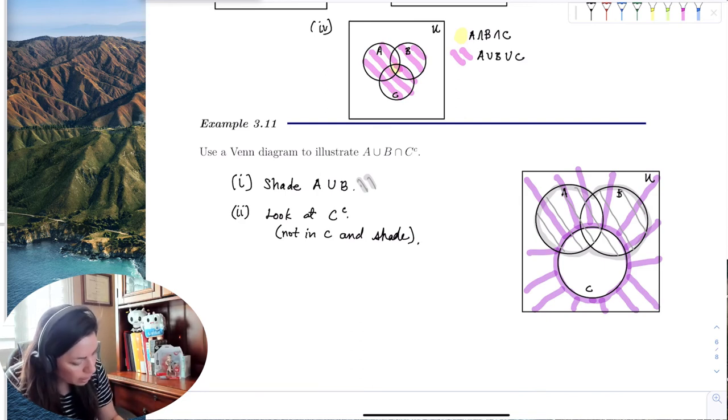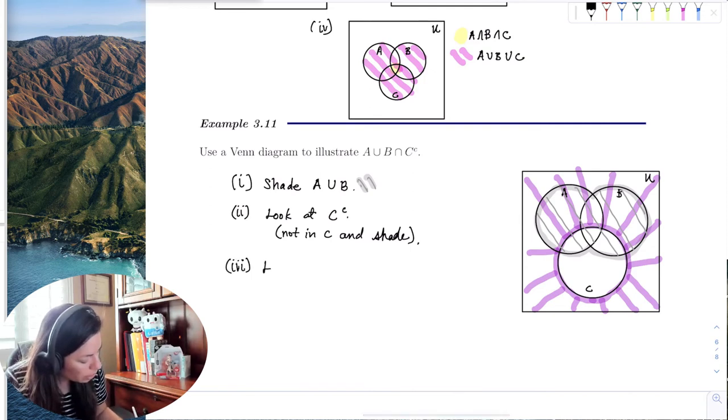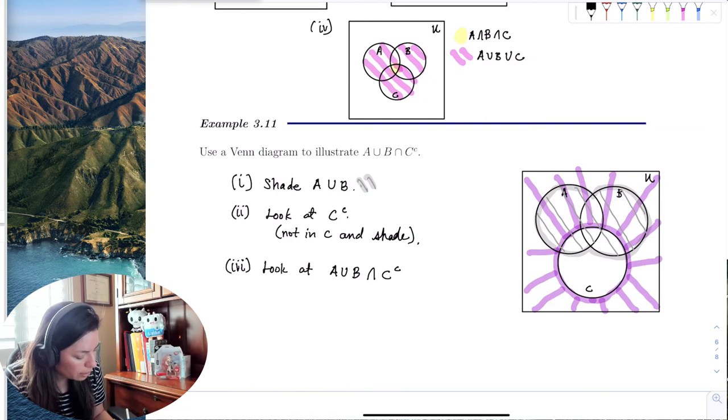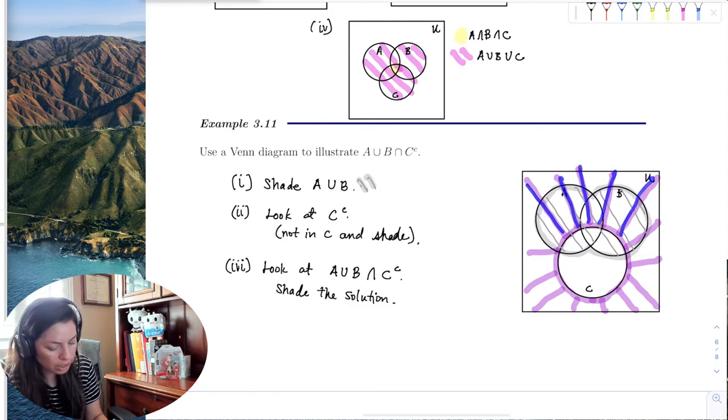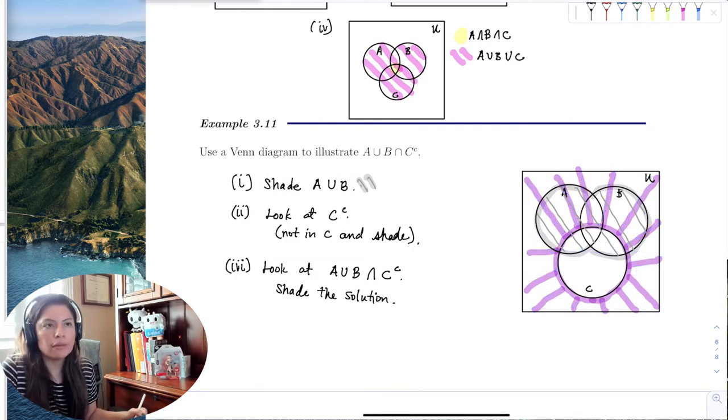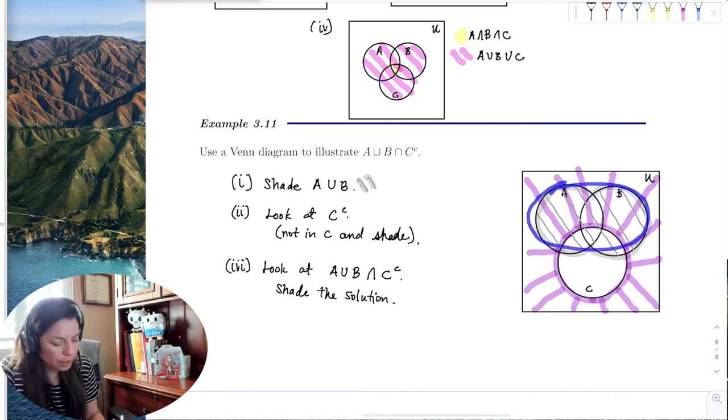Now, if I look at the set, look at the union of A and B and intersect it with C complement, and shade the solution. So here's the A union B, and C complement is this purple sun shining out of there. Now, if I look down here, I can see that there's no overlap with gray, because A union B is up here. So none of this down here will be included. But I do see A union B up here.